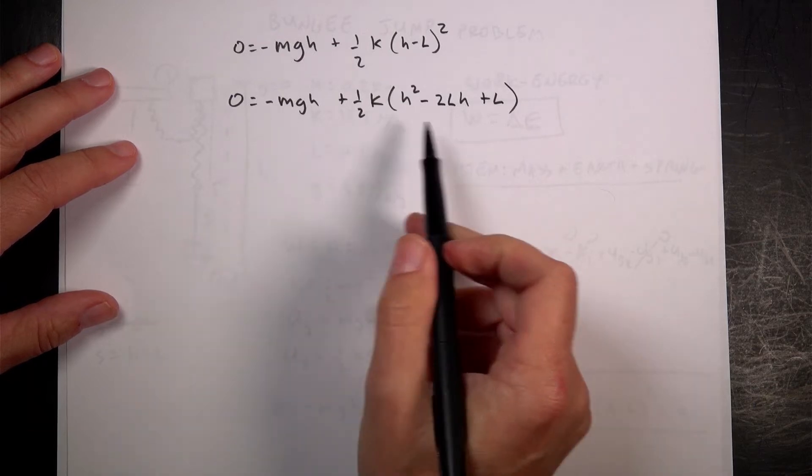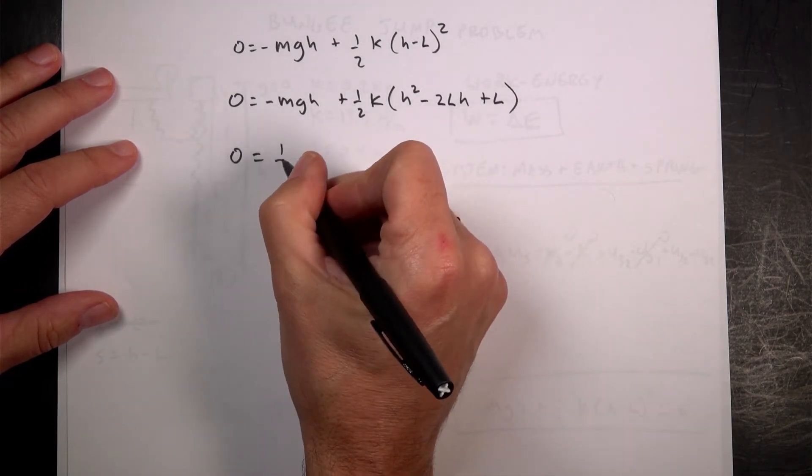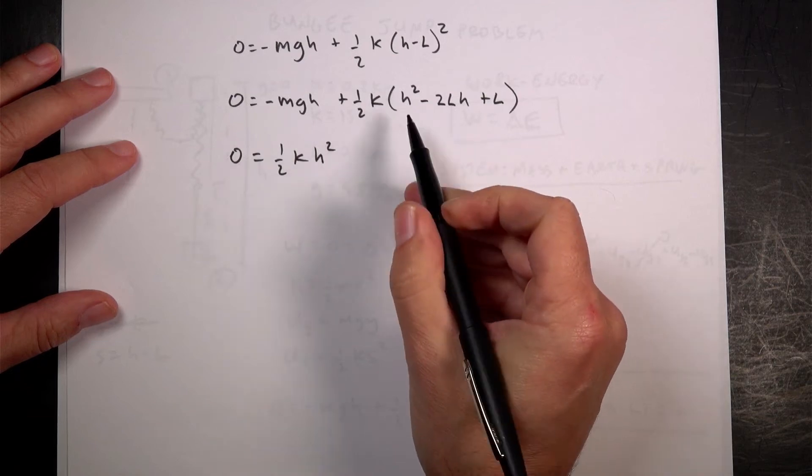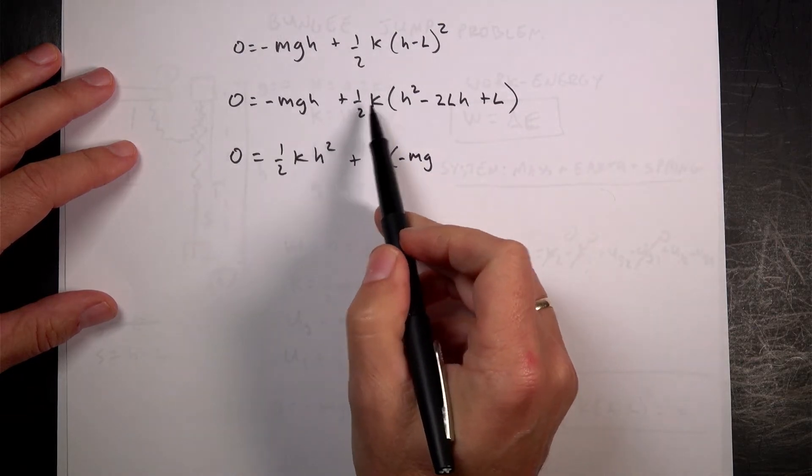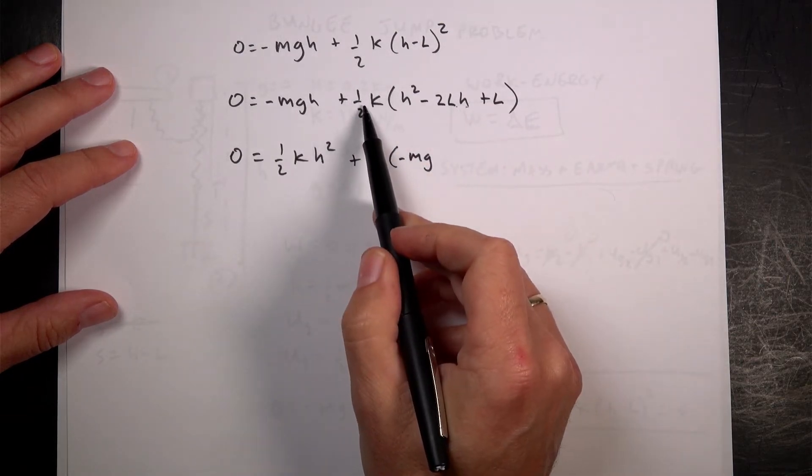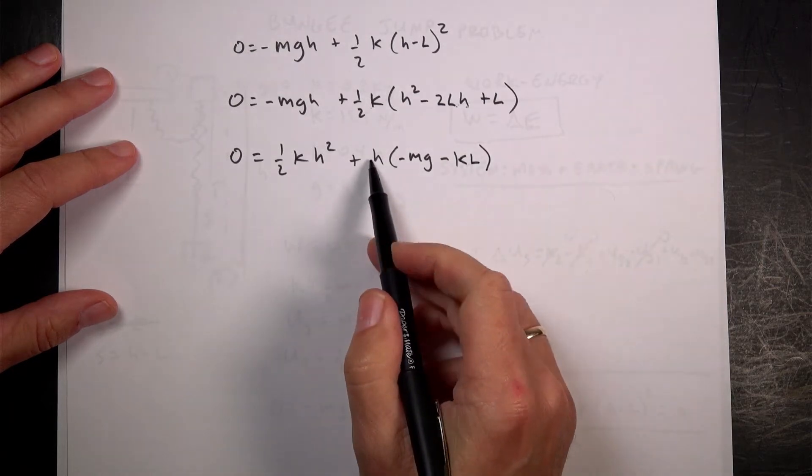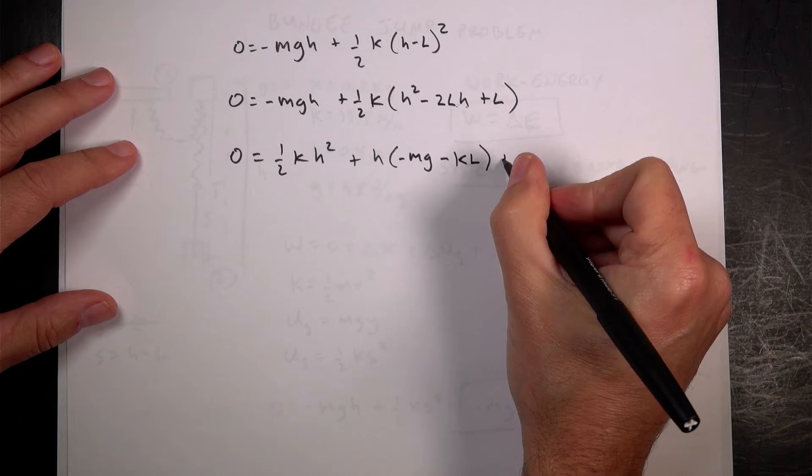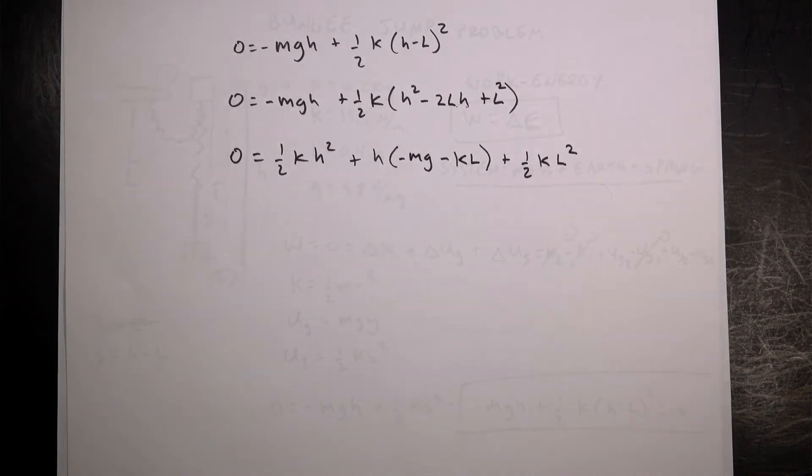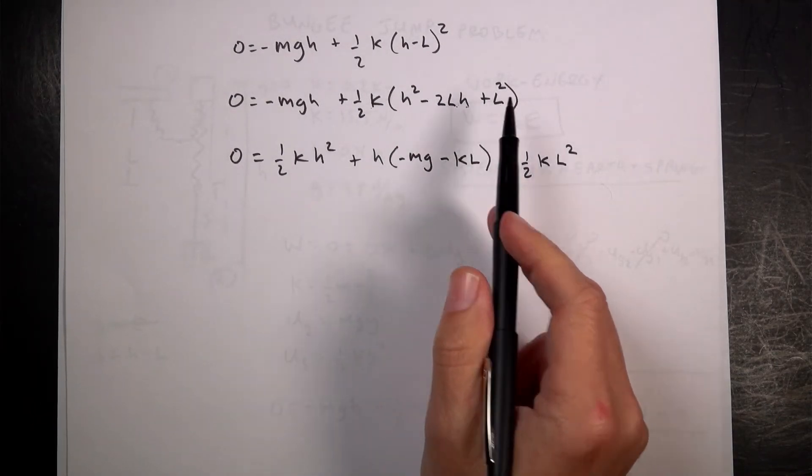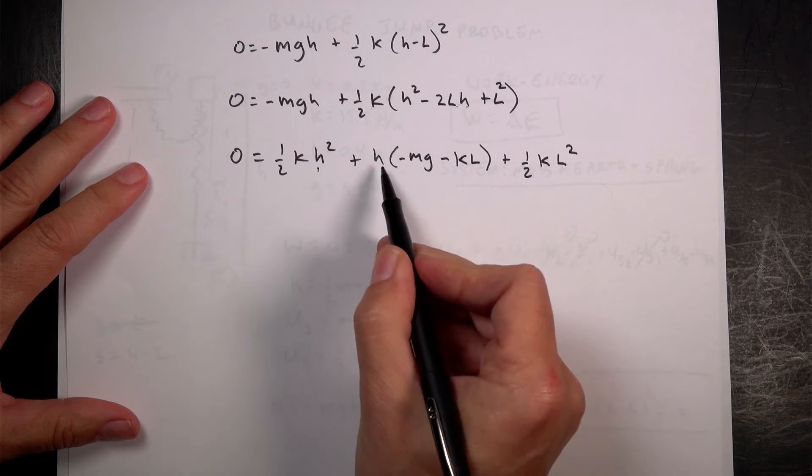Now I want to gather all my terms together. I want to get all the H's together. So let's say zero equals, I have one half K times H squared. So it's one half K H squared. Now what about my H term? So let's say plus H. I have a negative MG. And then if I multiply this over here, I have an H term. So I have one half K times negative two L. So I get negative K L times H. And then finally I have a constant term. I have this times that. So I get plus one half K L squared.